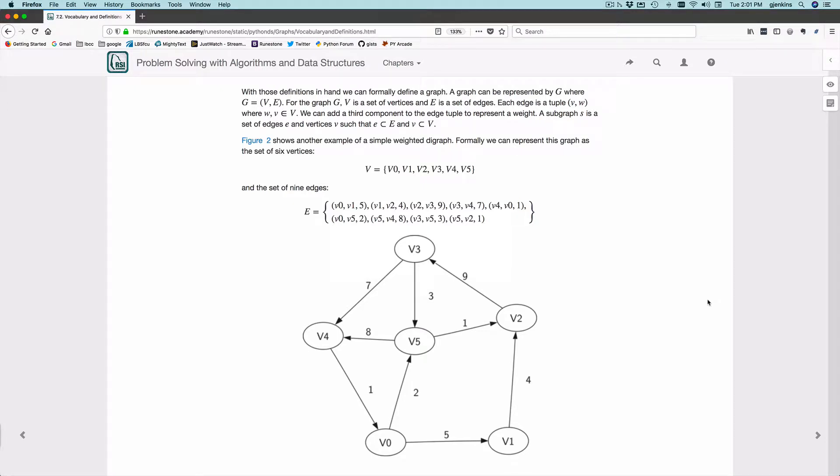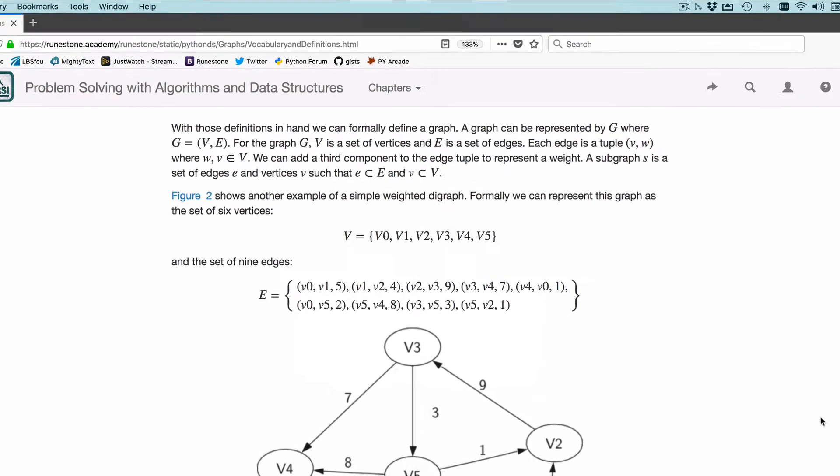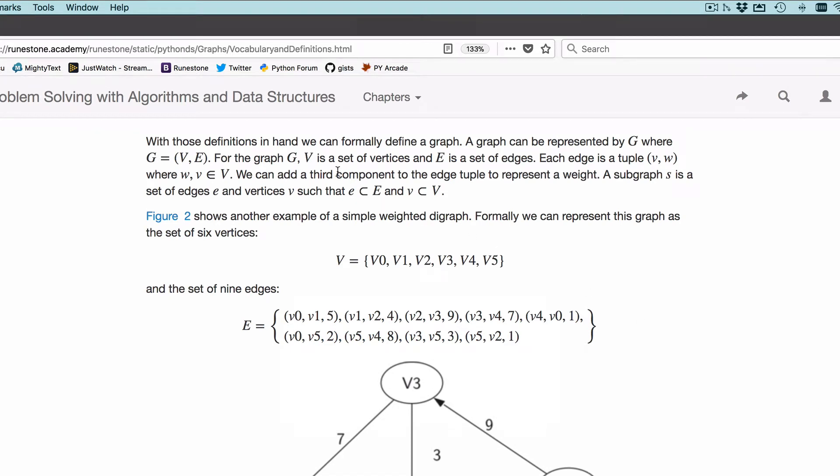Now let's look at the mathematical definitions of a graph. I've gone directly to the text of the book. This is a formal way of defining a graph in mathematics, and we're going to walk through it slowly here.